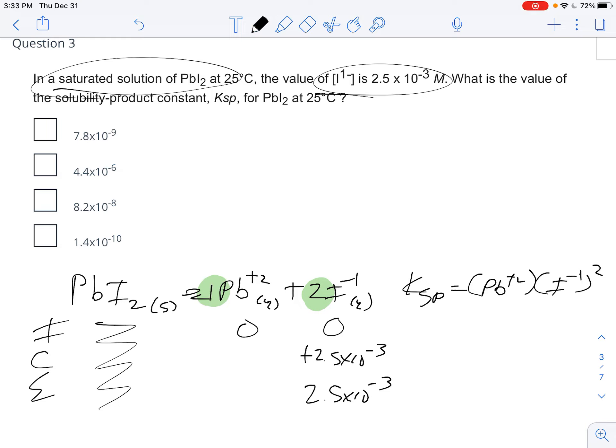But because it's a two to one ratio here, this did not go up by 2.5 times 10 to the negative third. That would be a one to one ratio. Instead, it went up by half of that.